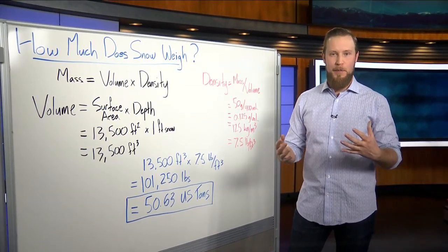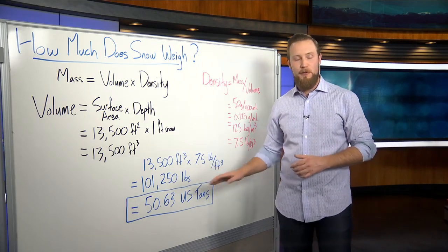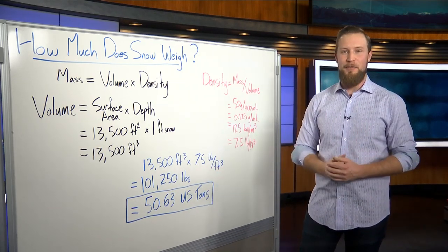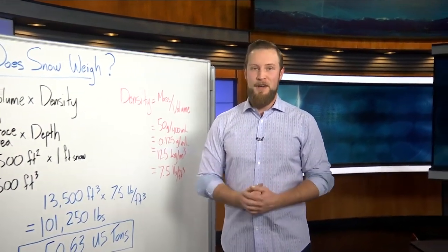Convert that to tons is the number that people know how to work with and means a little bit more to us. That is roughly 50 U.S. tons of mass of snow sitting right here on our roof at Q2. Now, how's that for some winter impacts?